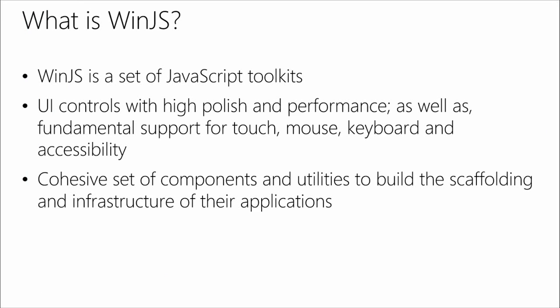WinJS today is a set of JavaScript toolkits, and we have two main toolkits. The first toolkit is really around UI controls and widgets — specifically high-polished widgets centered around performance. We believe these widgets are great assets to your application because we've designed them with touch, keyboard, mouse, and accessibility built right into the UI components. On the other side, we have lots of infrastructure so that you can scaffold out your application — things like a scheduler, data binding, a promises implementation that's very compatible with the new ES6 promises, and pages infrastructure.